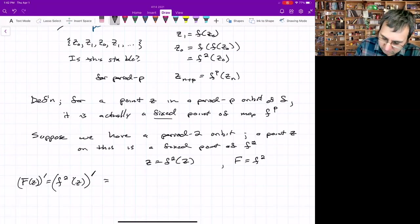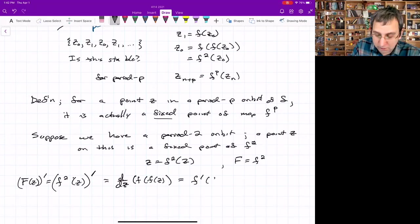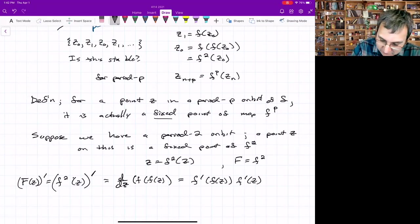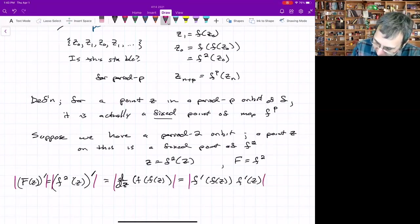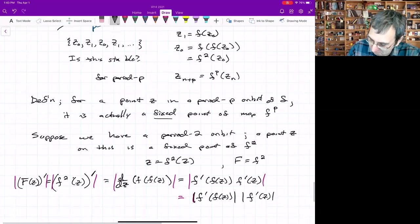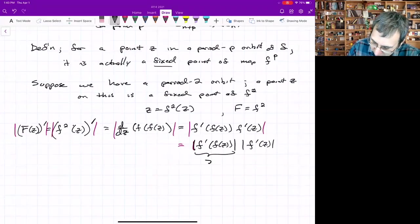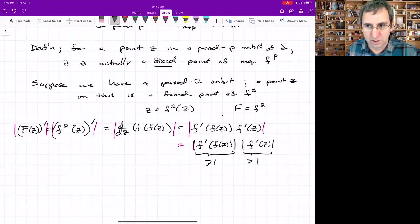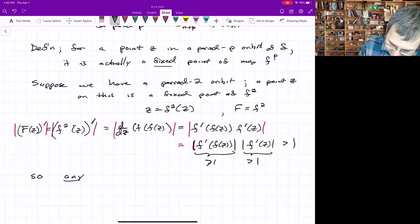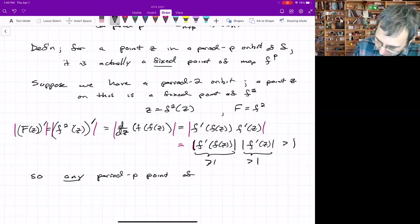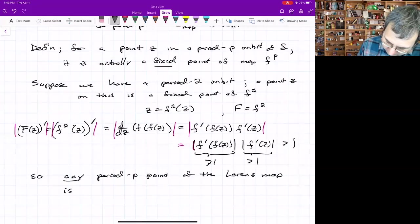And what will this be? Well, we need to use the chain rule. This is just the definition of the derivative of F of F of Z, which is F prime, evaluated at F of Z, times F prime Z. And now just take the magnitude. All we need to care about is the magnitude. The magnitude of this is going to be the magnitude of F prime evaluated at some point, times the magnitude evaluated at some other point. And of course, both of these are greater than 1, because the slope anywhere along is greater than 1. So then this will be greater than 1. So any period P point of that map has been called the Lorenz map is unstable for any P.